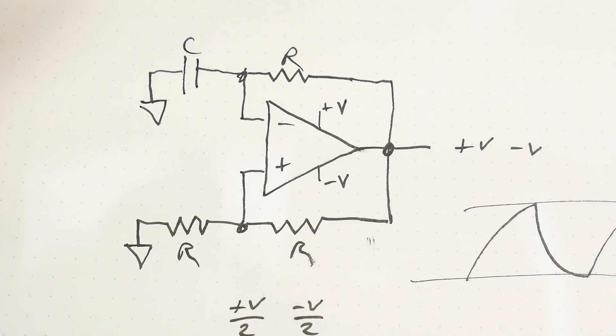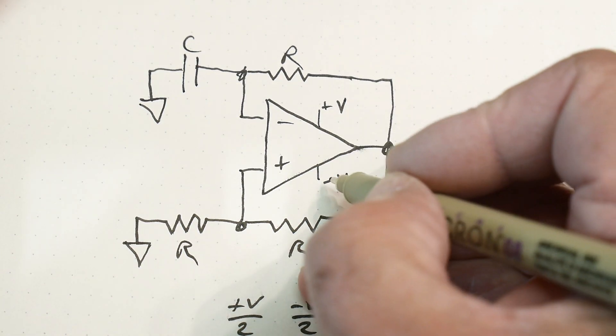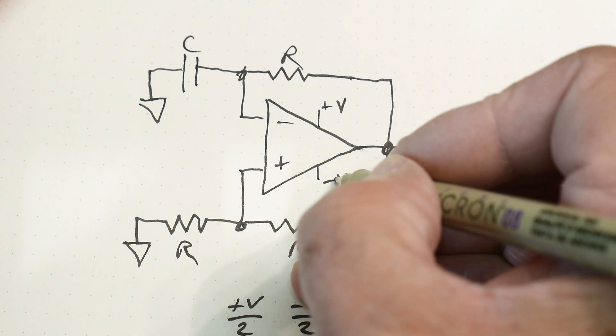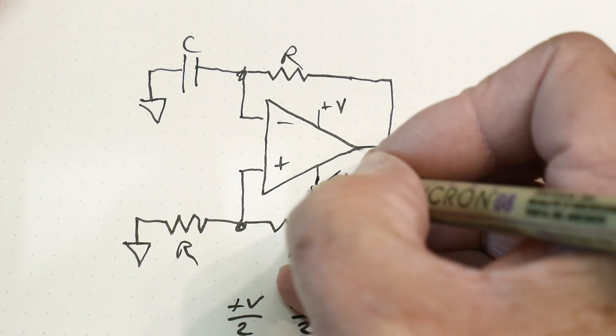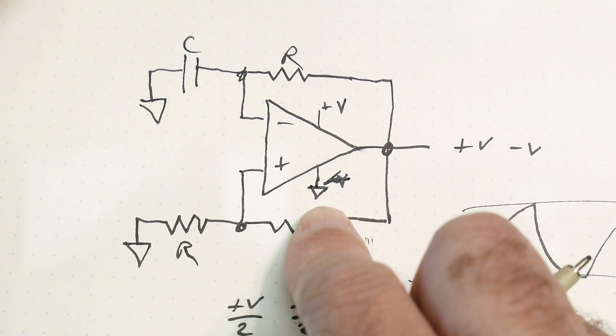The circuit that I want to talk about today is, what if you don't have minus V? What if your op amp is single ended? What if this is ground?